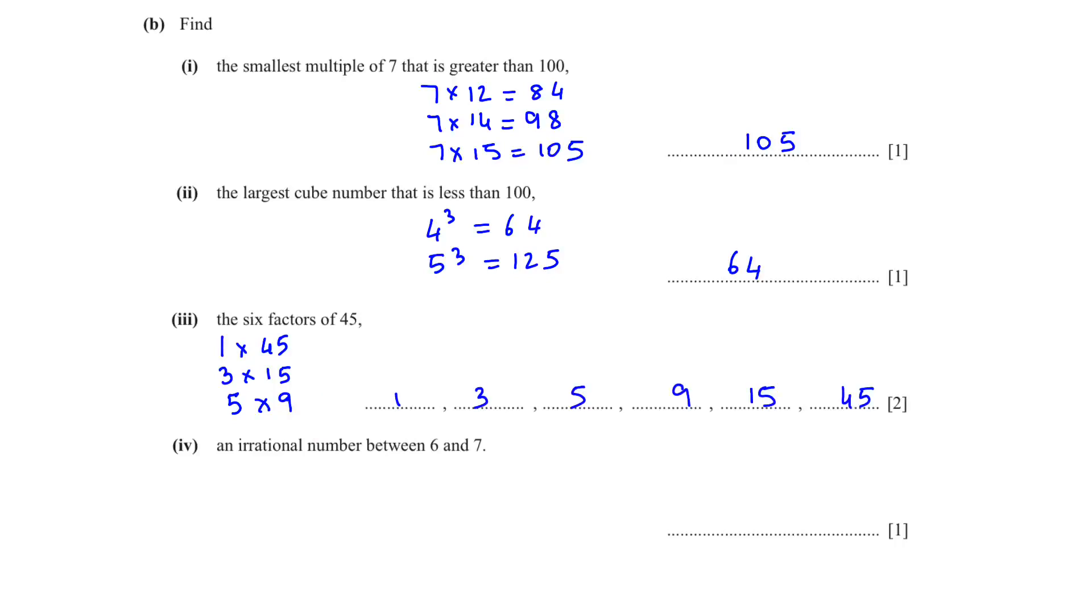An irrational number between 6 and 7 - whenever you want to find an irrational number between two numbers, write these numbers as square numbers. So 7 square is 49 and 6 square is 36. After this you write the numbers as square root, so square root 36 and square root 49. Any number between square root 36 and square root 49 in the square root form will be an irrational number, so you can write square root 37 or square root 38.